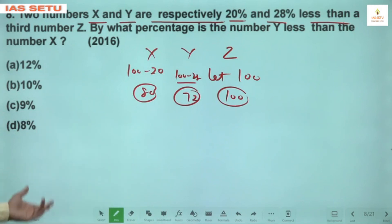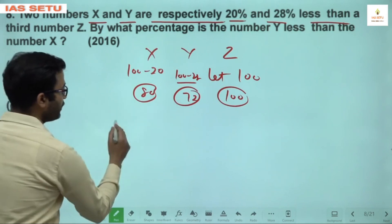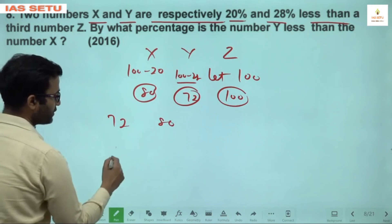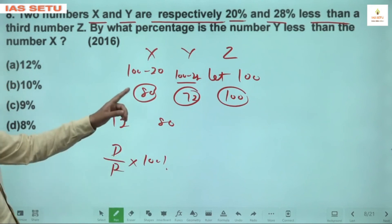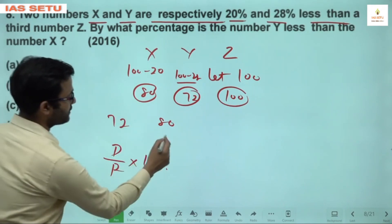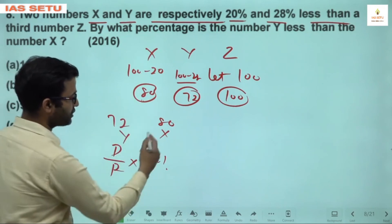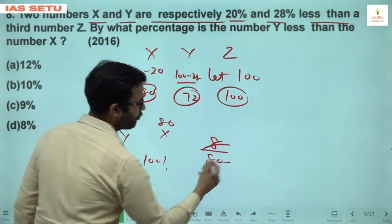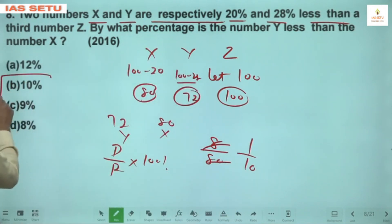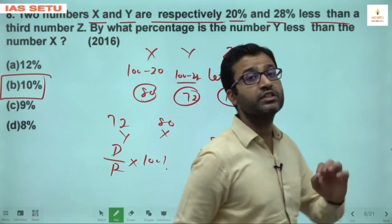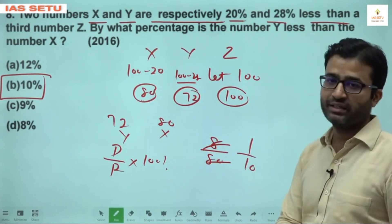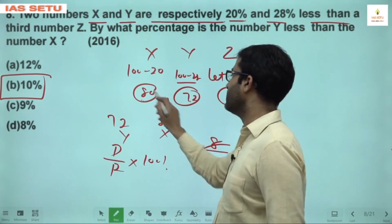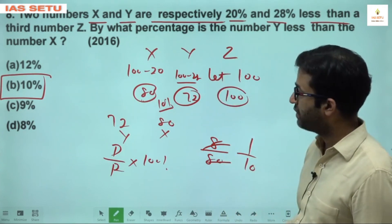So Y is 10% less than X. 72 is 10% less than 80. Question 8 answer is 10%.